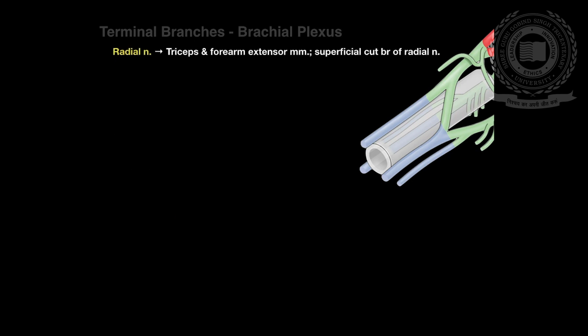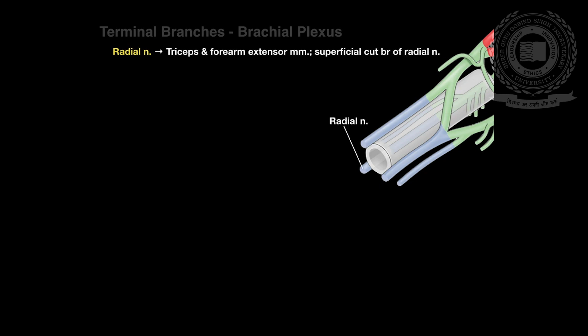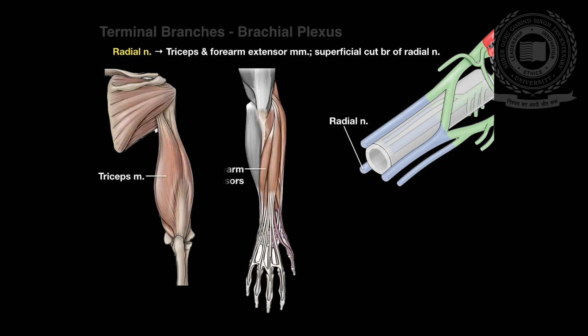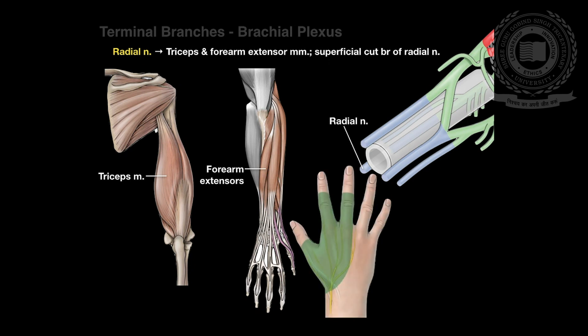The radial nerve is derived from the posterior cord. The radial nerve continues along the posterior inferior surface of the axillary artery and innervates the extensor muscles of the elbow, wrist, and fingers. Sensory innervation is from the skin on the dorsum of the hand on the radial side.